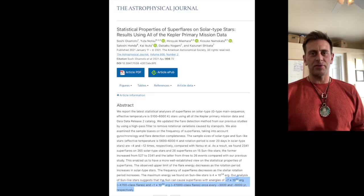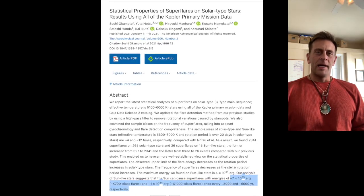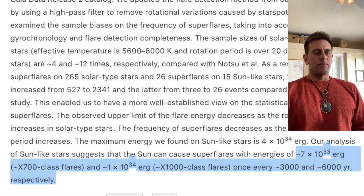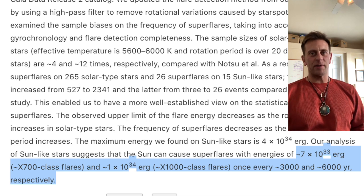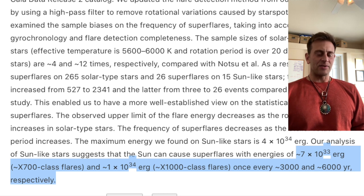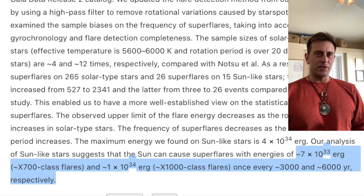Hey folks, today we are going to do two things. We're going to go over some solar cycles and we are going to talk a little bit about the aftermath of the disaster. We saw this yesterday as part of the Q&A, and this relates to the 3,000 and 6,000 year super flare cycles of the sun, where we get about an X700 every 3,000 years and an X1000 every 6,000 years. We discussed this in terms of their destabilization of the ice sheets.